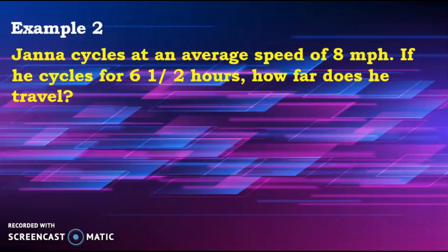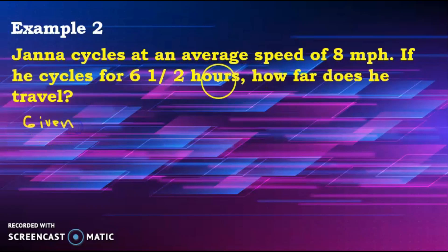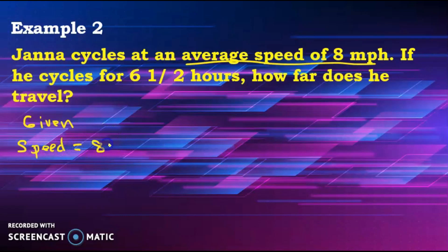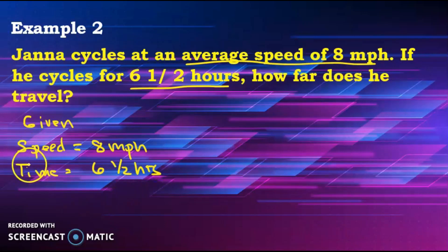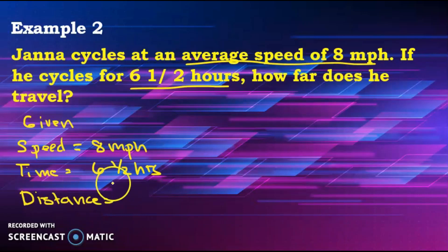Example number 2: Jana cycles at an average speed of 8 miles per hour. If he cycles for 6 and a half hours, how far does he travel? Let's find the given. Speed is 8 miles per hour, and time is 6 and a half hours. What is missing? The question asks 'how far' — so distance is missing.